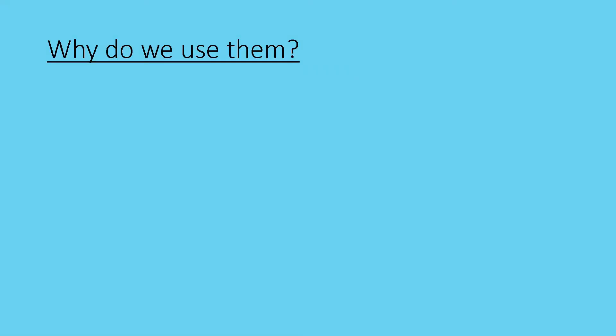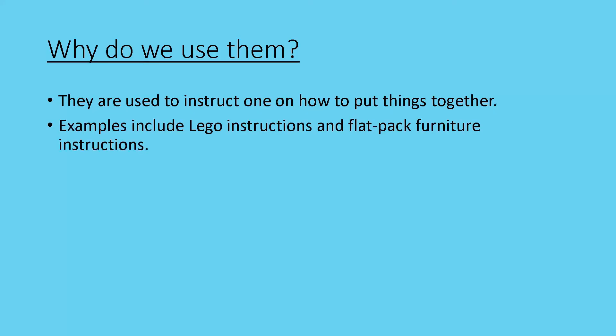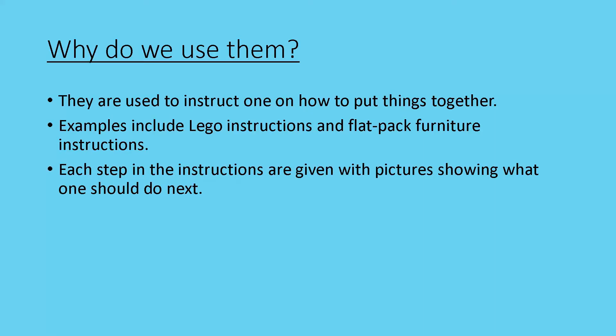Why do we use assembly diagrams and what exactly are they? Okay, so they're used to instruct one on how to put things together. Examples would be Lego instructions or flat pack furniture instructions. All right, each step in the instructions are given with pictures showing what one should do next. That means that there aren't normally words or any other instructions included in it.